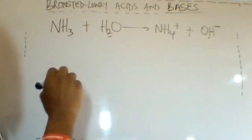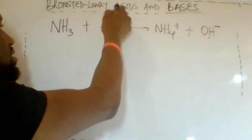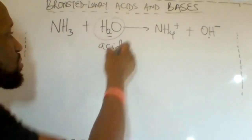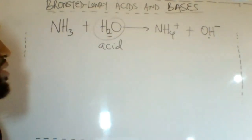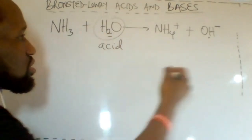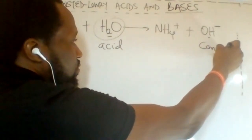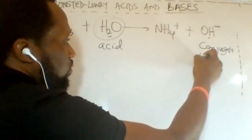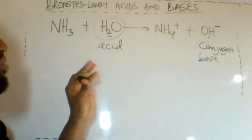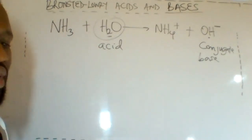A Brønsted-Lowry acid is a substance that donates a proton. Therefore, in this equation, H₂O is the Brønsted-Lowry acid, because it donated the proton. The product formed by donating that proton becomes the conjugate base. Whenever the Brønsted-Lowry acid reacts and donates a proton, it produces a conjugate base.